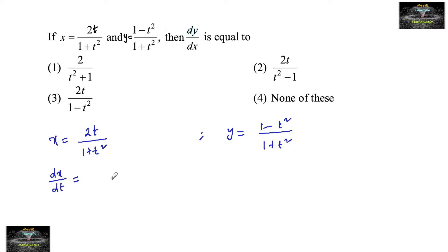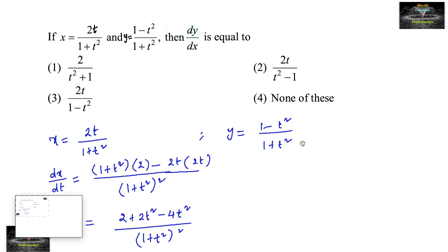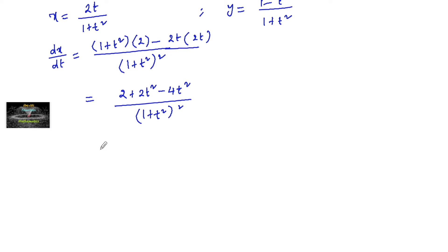dx by dt is equal to 1 upon (1 plus t square) whole square, times: 1 plus t square times differentiation of 2t is 2, minus 2t times differentiation of 1 plus t square is 2t. Which equals 2 plus 2t square minus 4t square upon (1 plus t square) whole square, that is 2 minus 2t square divided by (1 plus t square) whole square. This is dx by dt.